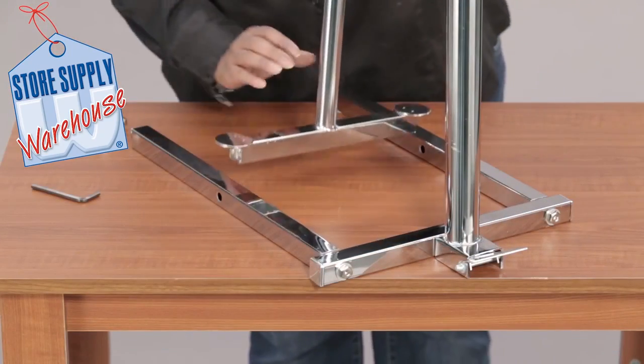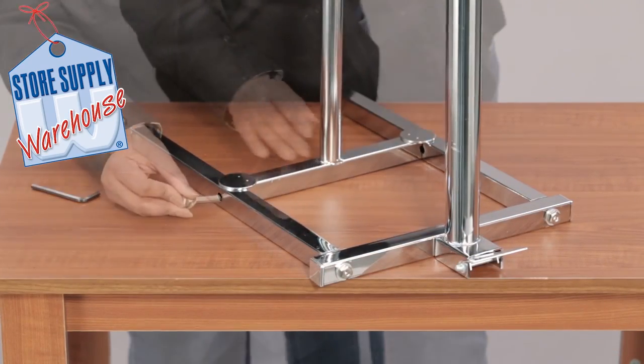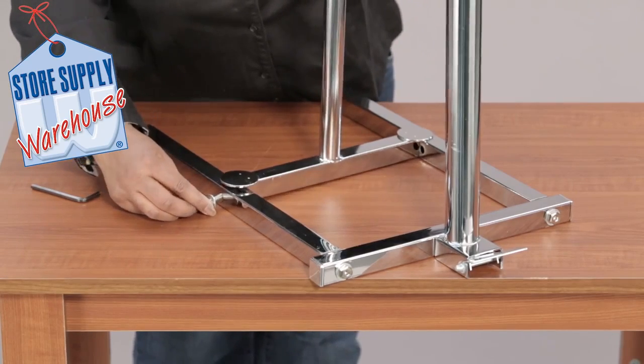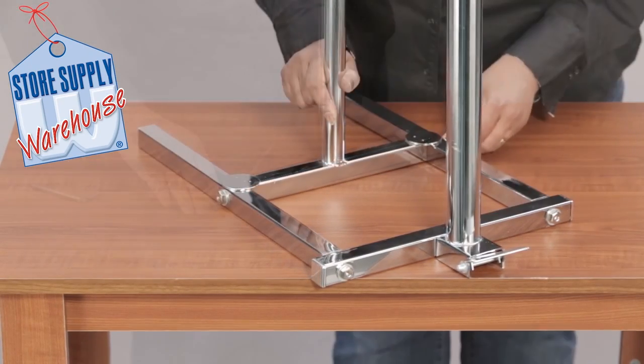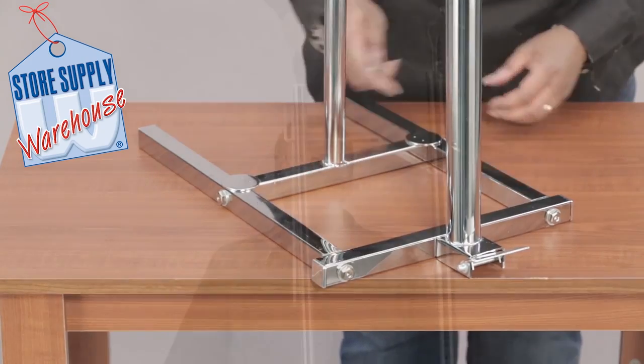Insert the middle stabilizer bar. Tighten the allen bolt and washer. Repeat on the opposite side.